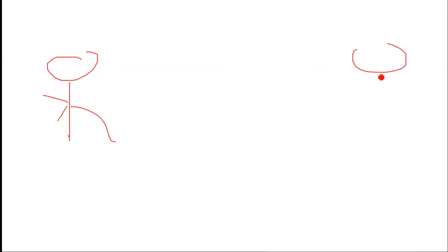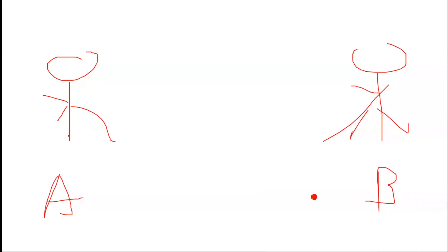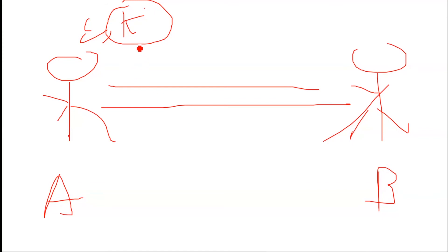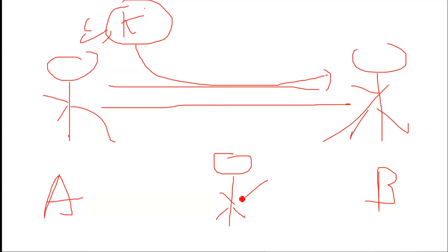Let us think about the Alice and Bob scenario. Alice wants to encrypt a message using a key K, and this key K should be known to Bob. But if they have a channel of communication and Alice can send this key securely to Bob, there is still a problem because there is an attacker, Eve, in the middle.